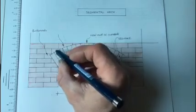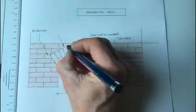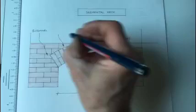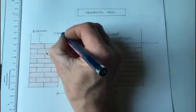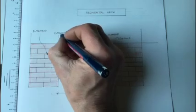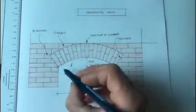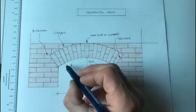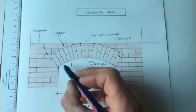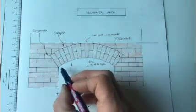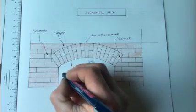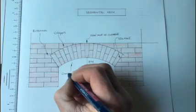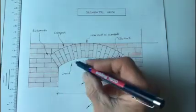These cuts here, all of these ones, these ones here, these are all called creepers. This line here, that when we started doing the setting out for the actual arc of this, this is called a chord, with an H. Chord.